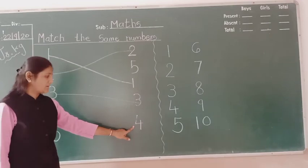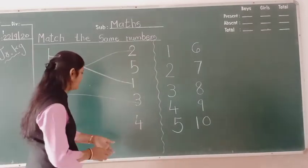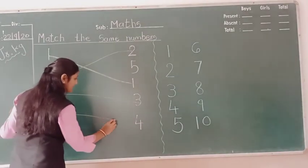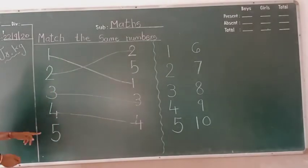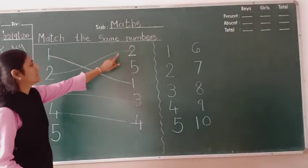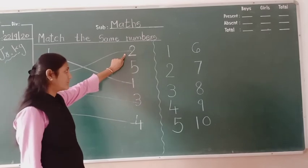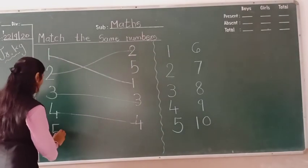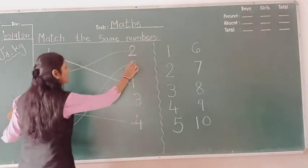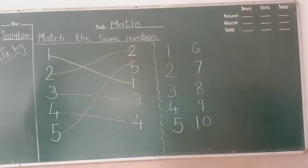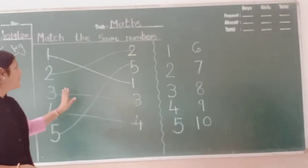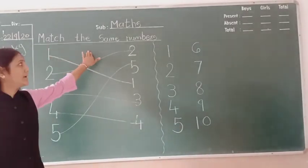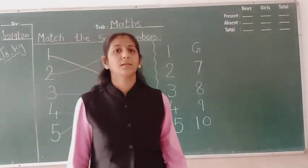Then here is number 4? Yes, this is number 4, so match it. And last number 5. This is number 2. This is number 5. Okay, so match it. Okay, so students, practice at home, match the same numbers. Okay? Thank you.